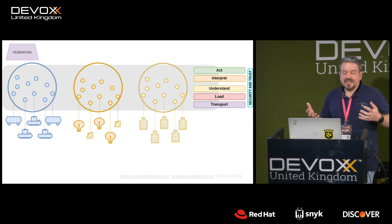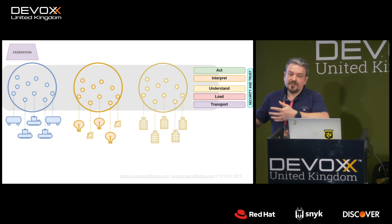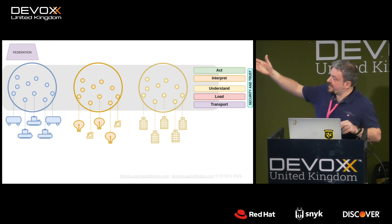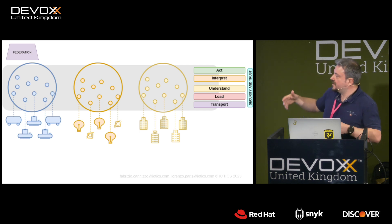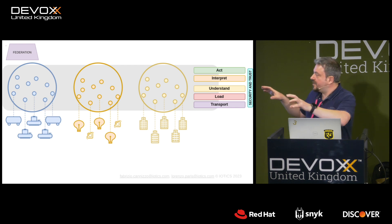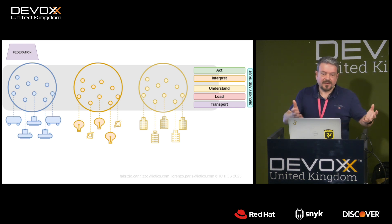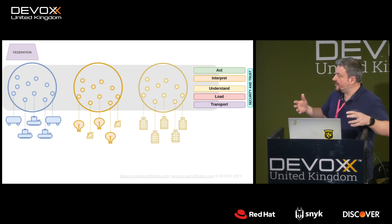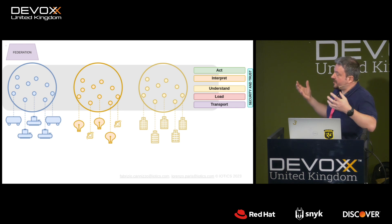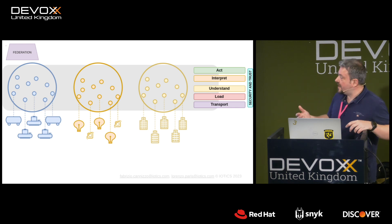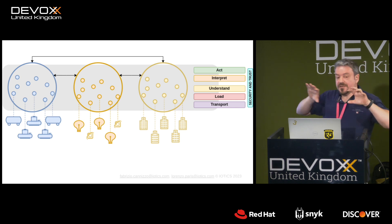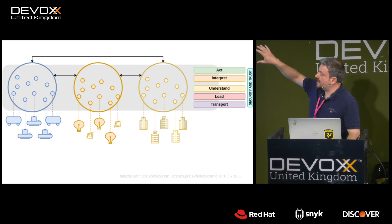Imagine multiple organizations entering this environment, each with their own digital twins. A federated model makes perfect sense: each organization brings its own set of twins, makes them available with appropriate access control rules, and can see only what it's allowed to see. Organizations cooperating in a federated model, all communication occurring on that symmetrical control layer.